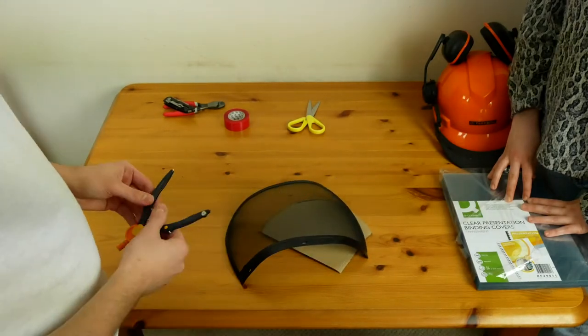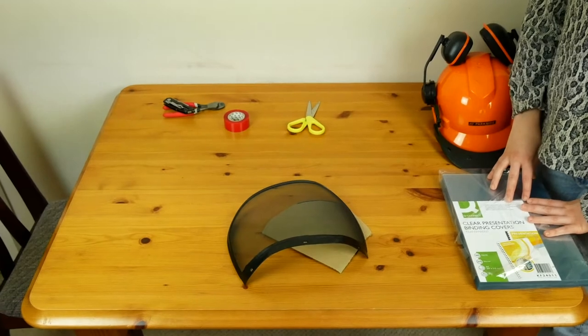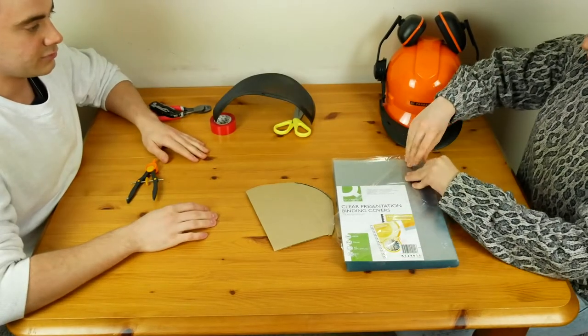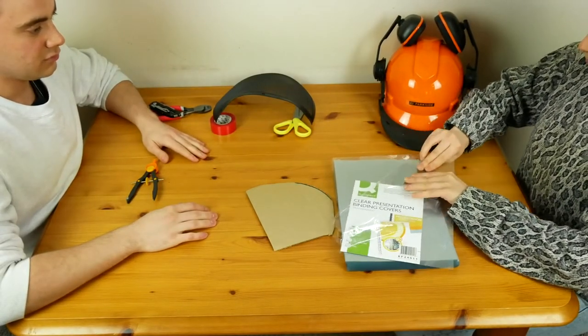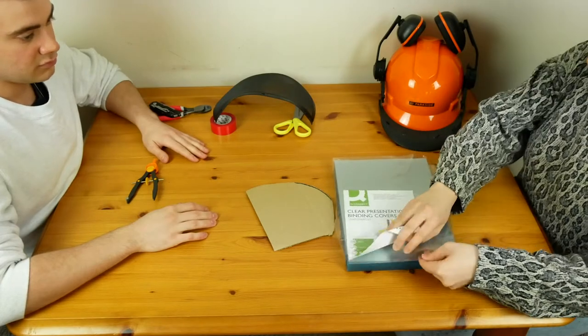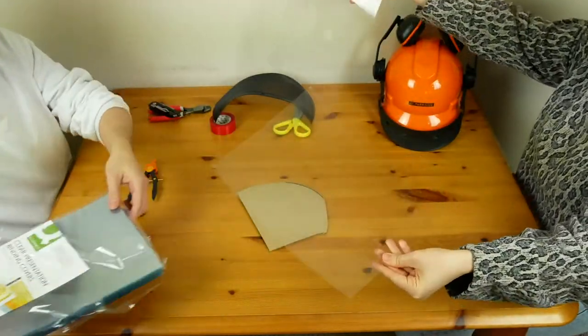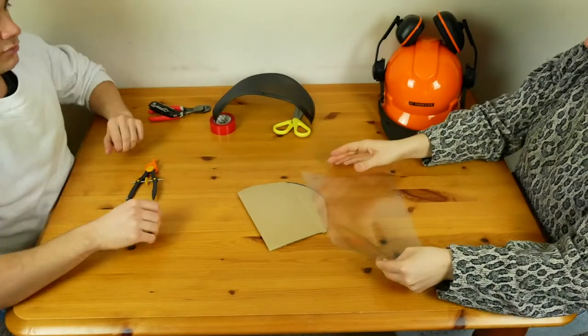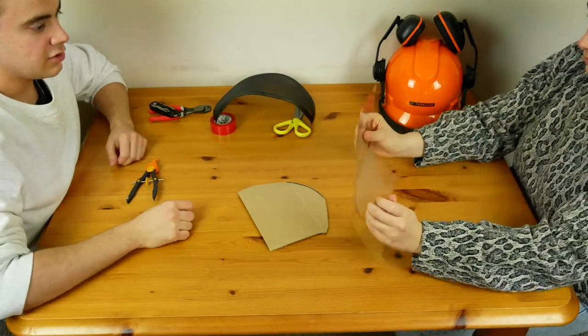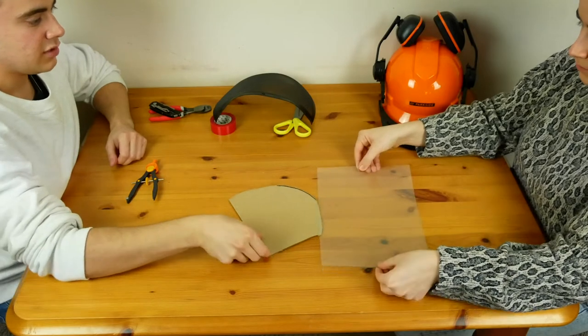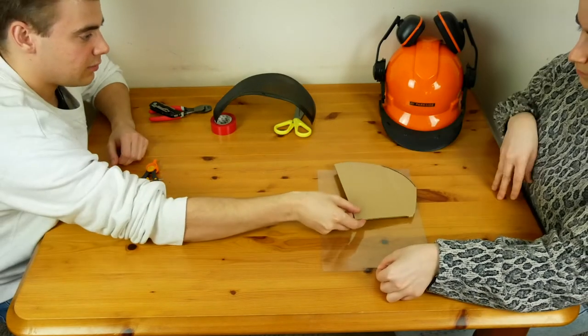Once we have done this, we will use this template to cut our report covers. We're going to use two of them to strengthen the film a bit. Fantastic. So we're going to have to stick them together and we're going to use our template to cut the little corners.